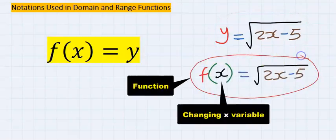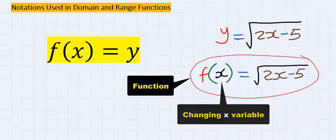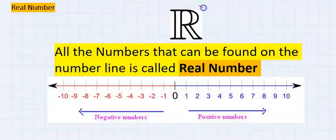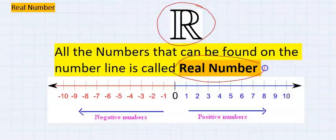Secondly, we use R to represent real numbers. All the numbers found on the number line are called real numbers.